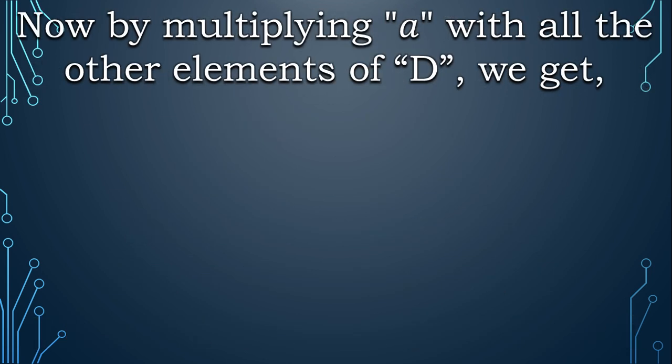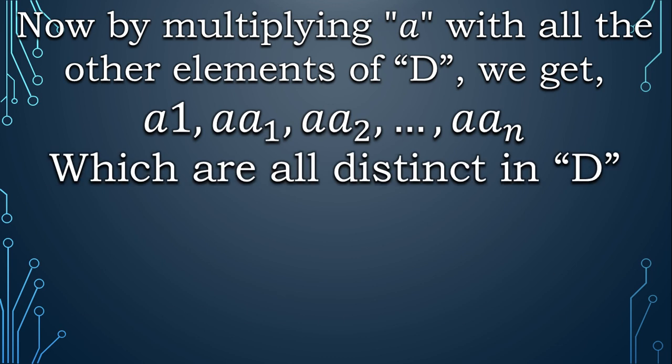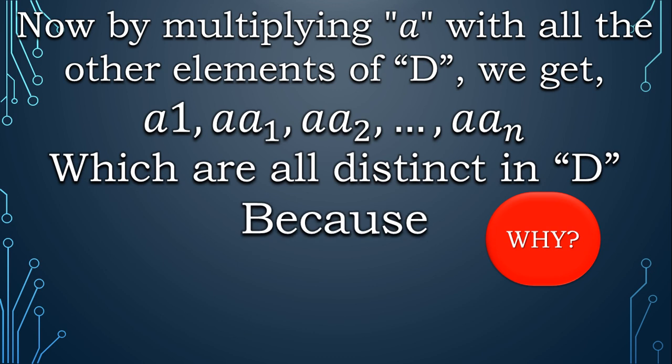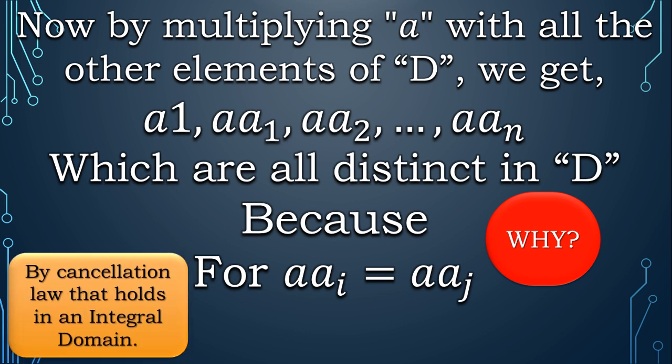We can find the inverse of a by multiplying it with all the elements of D. So we got these elements: a·1, a·a₁, a·a₂, up to a·aₙ, and all these elements are distinct from each other in D. You may ask why? Because if a is multiplied by two distinct elements in D and gives the same answer, then by using cancellation law in integral domains, we say that those distinct elements were basically the same.